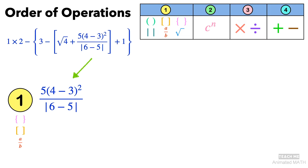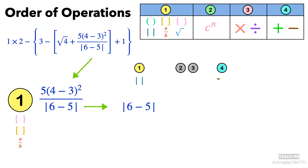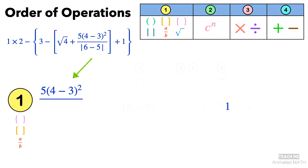Let's start by simplifying the denominator. We still need to follow the order of operations. Step 1: simplify the expression inside the absolute value symbol. Steps 2 and 3 don't apply here, so we go straight to Step 4. 6 minus 5 is equal to 1. The absolute value of 1 is 1. Now we've removed the absolute value symbol.